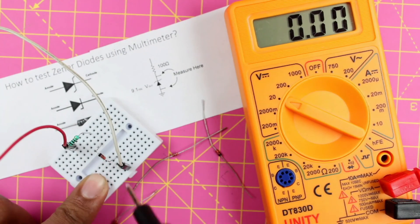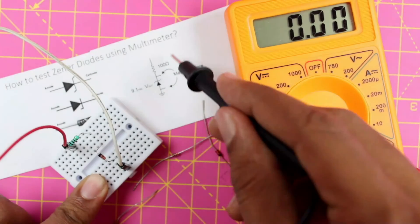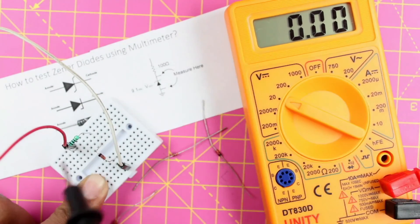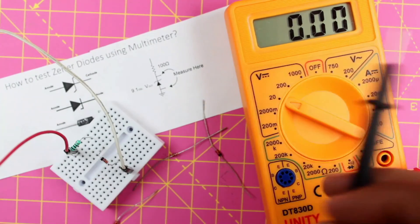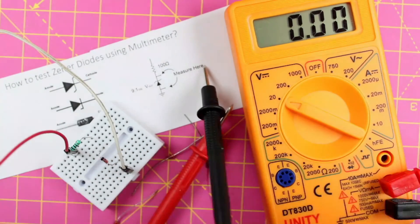It can be a 5.1, 3.3. Just make sure that the voltage you are giving here is always higher than the voltage of your zener diode. So that is it guys. Thanks for watching this video. Have a nice day. Bye bye.